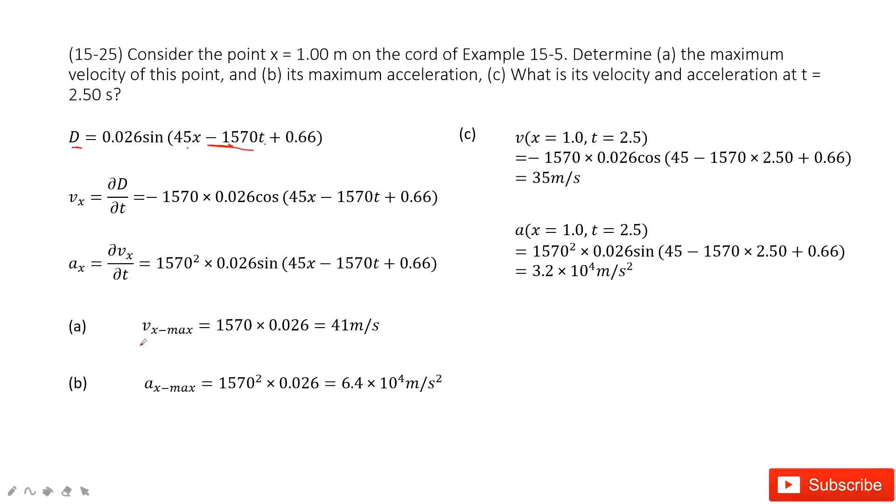Now, first question asks you to find the maximum velocity. So we look at the function. In what situation is it maximum? The cosine, this term, becomes negative 1. It becomes a maximum.